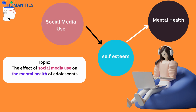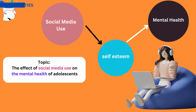In a humanities research project, you may look into the relationship between social media use and mental health, with self-esteem acting as a mediator. Social media use is the independent variable, mental health is the dependent variable, and self-esteem is the mediating variable.